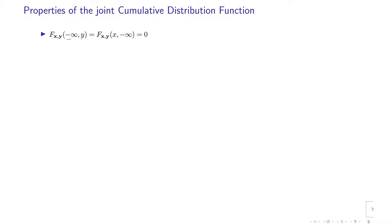The properties of the joint cumulative distribution function are as follows. For instance, if you put x equal to minus infinity and keep y, or if you put y equal to minus infinity, the set D(x, y) becomes empty, and the probability should be zero. So on the margin of the x side, if you have this x-y plane and you look from the side at minus infinity, the function should be zero.